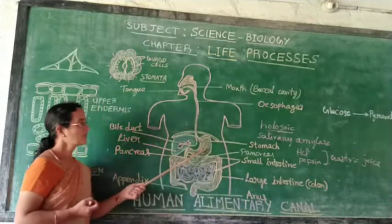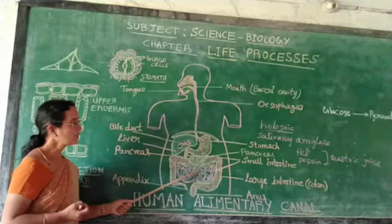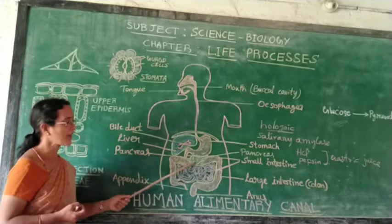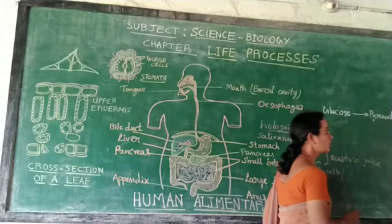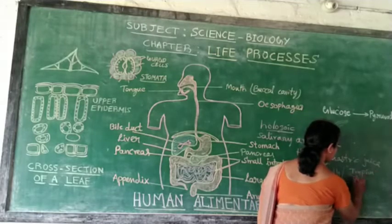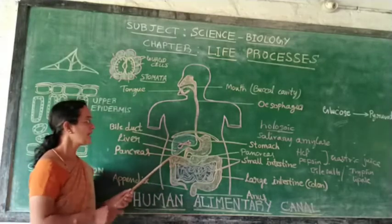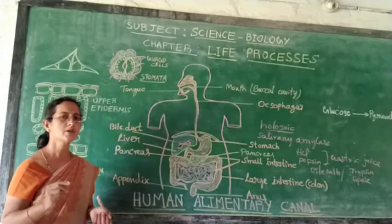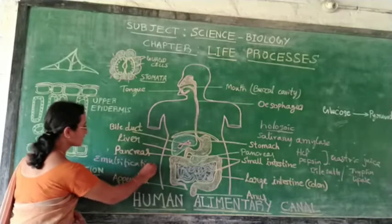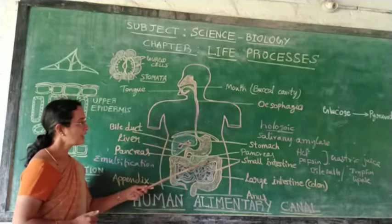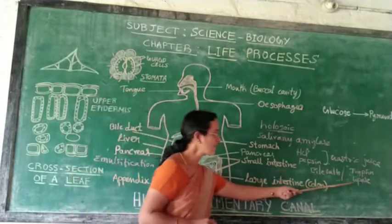In the stomach there are hydrochloric acid and pepsin, which together constitute the gastric juice. Gastric juice consisting of hydrochloric acid and pepsin helps in the further digestion of food. Hydrochloric acid provides an acidic medium which helps pepsin to become active. After the food mixes with gastric juice and is partly digested, it comes to the small intestine, where it mixes with secretions from the liver and the pancreas. In the liver there are bile salts, and in the pancreas there are two enzymes: trypsin and lipase.